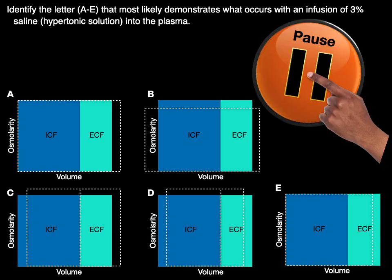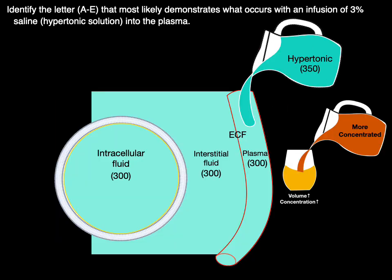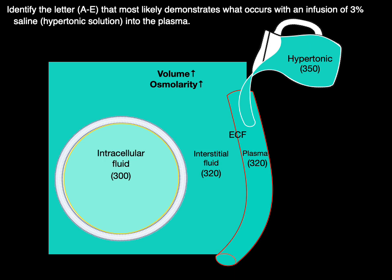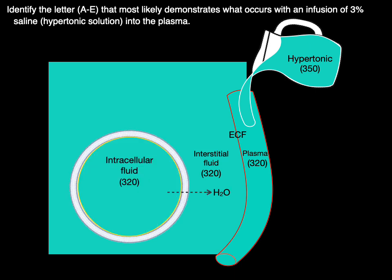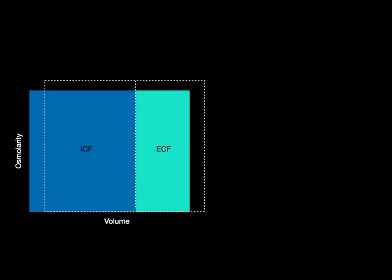Next question: identify the letter that most likely demonstrates what occurs with an infusion of 3% saline — a hypertonic solution — into the plasma. We're going to add a hypertonic solution to the plasma, so the plasma gets more concentrated, as does the interstitial fluid — the volume and osmolarity of both plasma and interstitial fluid get bigger. But now there's a difference in osmolarity between extra- and intracellular fluid. Water always moves towards the saltier environment until the concentrations equal each other. Which letter shows this? Letter C. This is a hyperosmotic volume expansion, like a high sodium chloride intake — this is what happens when you drink salt water.